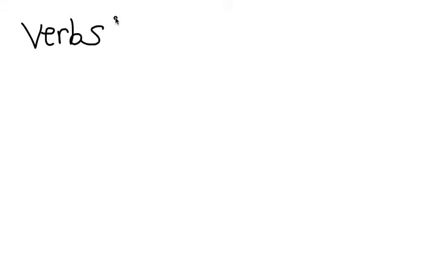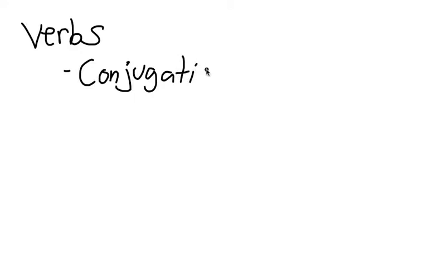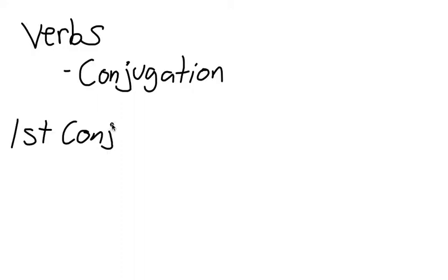Welcome back. Today we are talking about verbs, and the first thing we need to know about verbs is that verbs are divided into conjugations in Latin. Nouns are divided into declensions — in the last chapter we did first declension. This chapter we're going to do first conjugation and second conjugation.